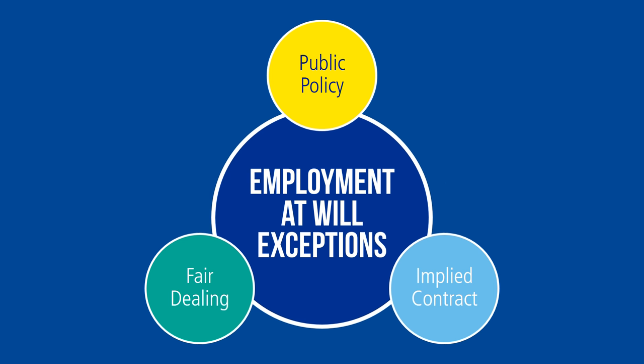The courts have recognized certain rationale for hearing employment at will cases. The three key areas are as follows. First, the public policy exception holds that employees can sue if fired for a reason that violates public policy — for example, if an employee refused to commit perjury and was fired. Second, the implied contract exception holds that employees should not be fired as long as they perform their jobs; long service, promises of continued employment, and lack of criticism of job performance imply continued employment. Third, the good faith or fair dealing exception suggests that a covenant of good faith and fair dealing exists between employers and at-will employees, and if an employer breaks this covenant by unreasonable behavior, the employee may seek legal recourse.